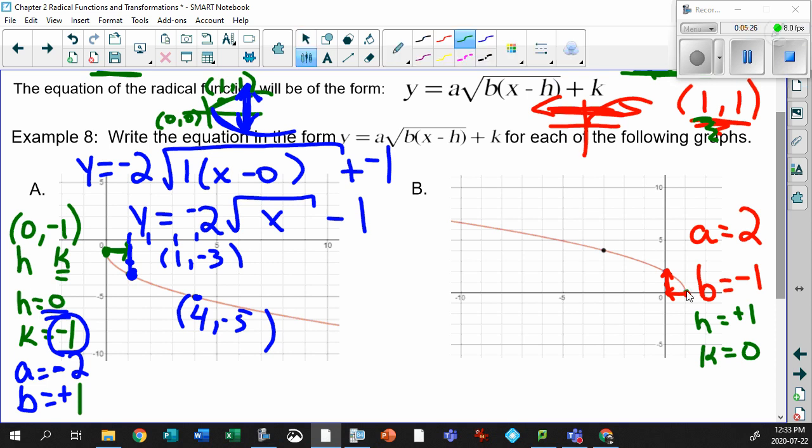Let's throw that into our equation, and everything should be good. So y equals 2. There's your 2 value. Square root. Your b value is a minus 1. Your x value is here. Plus 1. So that's a subtract 1. And your k is 0. So I'm not even going to write it.